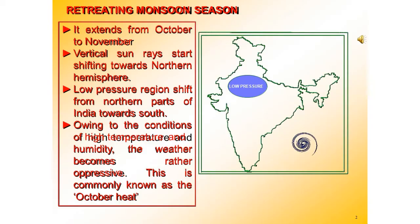During October to November, the apparent movement of the sun towards the south starts and the monsoon trough or the low pressure trough over the northern plains becomes weak. This is gradually replaced by a high pressure system. The southwest monsoon winds weaken and they start withdrawing gradually, and by the beginning of October the monsoon withdraws completely from the northern plains.